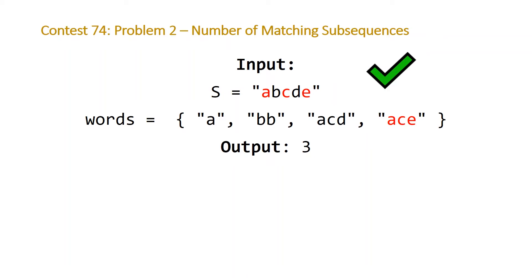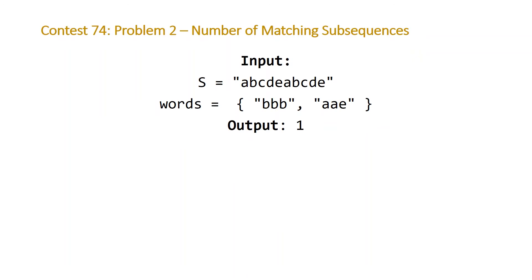So here we've doubled our string s to be a, b, c, d, e, a, b, c, d, e. And we now only have two words that we're looking for, one that we'll find and one that we won't find.